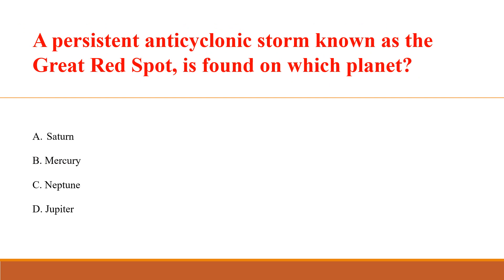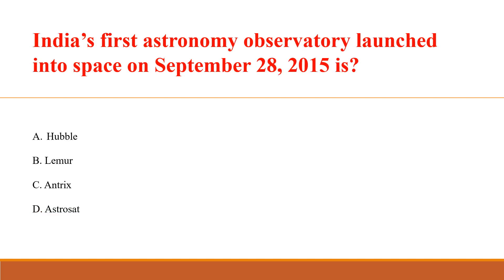A persistent anti-cyclonic storm known as the Great Red Spot is found on which planet? Answer D: Jupiter. India's first astronomy observatory launched into space on September 28, 2015 is: Answer D: AstroSat.